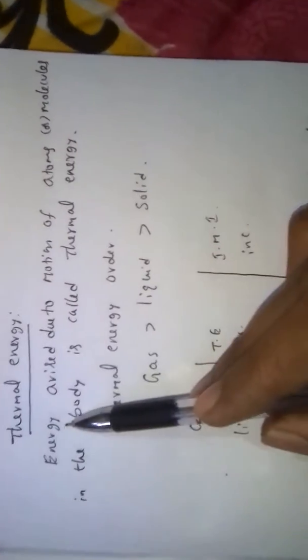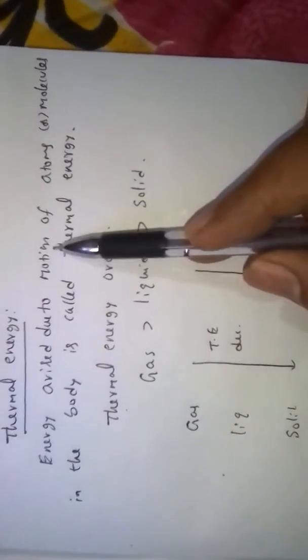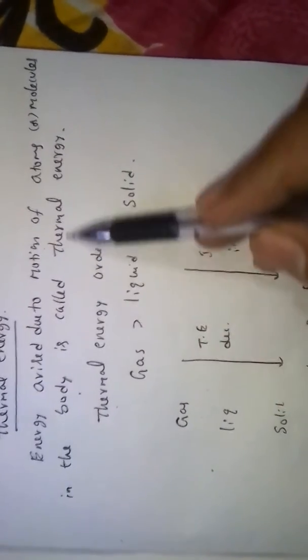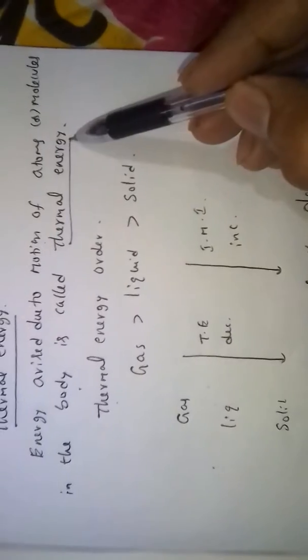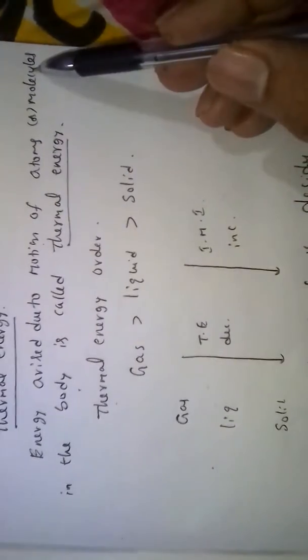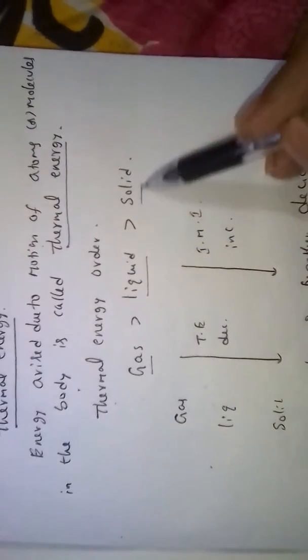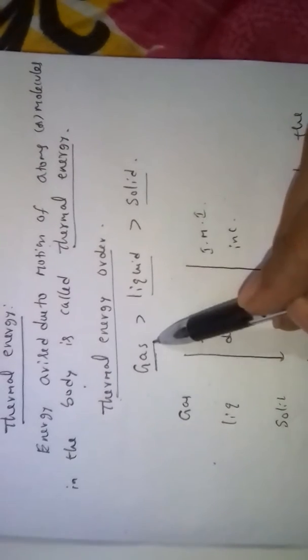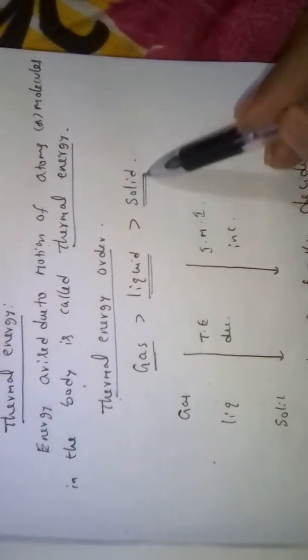Thermal energy is energy that arises due to motion of atoms or molecules in a body. Motion of atoms or molecules is higher in gases when compared to liquids when compared to solids. So thermal energy order: gases greater than liquids greater than solids.